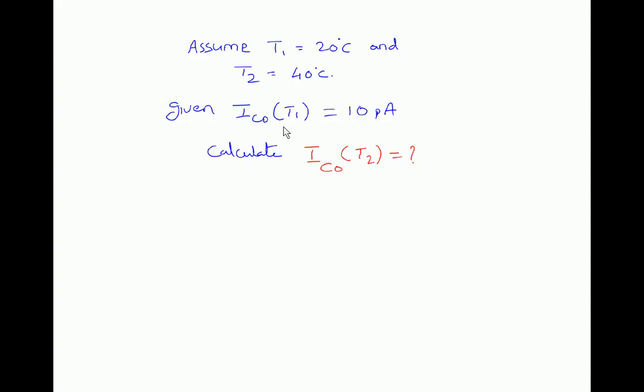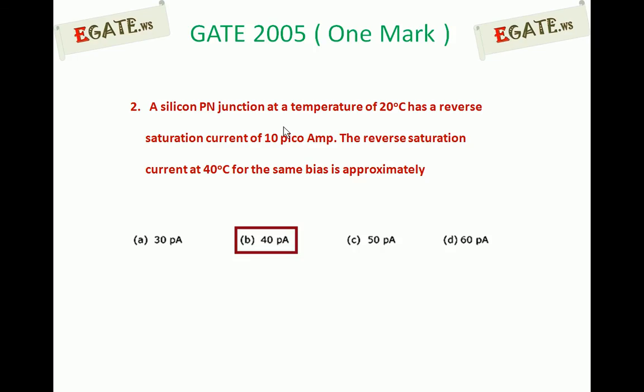Whenever more and more electron-hole pairs are created, they are added to majority carriers as well as minority carriers because they are generated in equal numbers. But majority carriers are large in number and minority carriers are small. So for a large number, adding a small quantity makes little difference. But for the smaller minority carriers, even adding a small quantity results in a relatively larger increase. So the rate of addition is very small for majority carriers, but considerable for minority carriers. Therefore, as temperature increases, minority carriers increase.